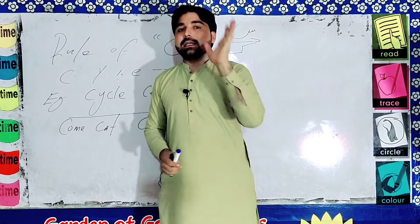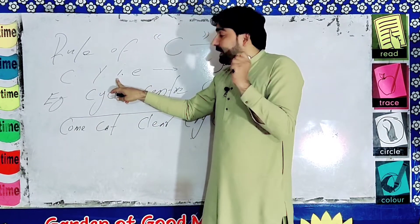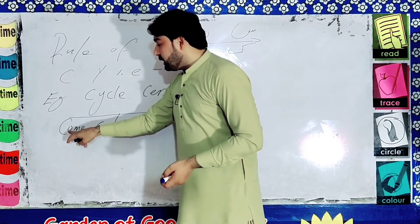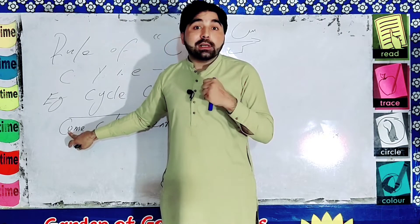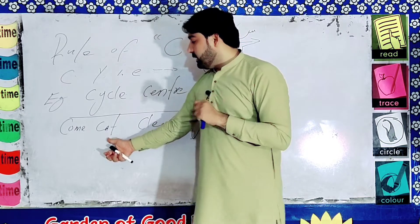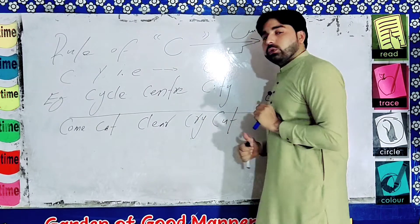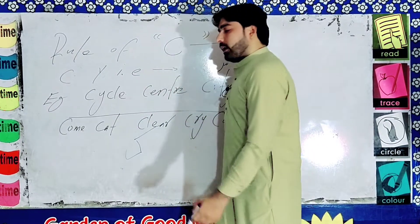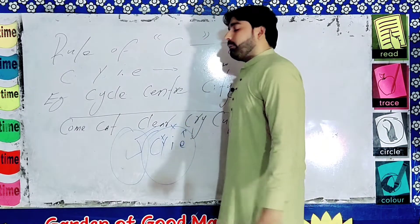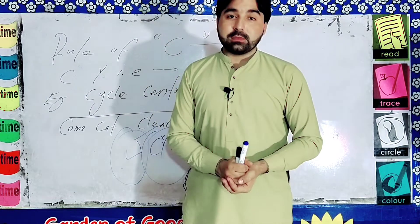یہ rule C کا S sound تھا۔ اب ہم K sound پر آتے ہیں — very simple case۔ اگر C کے بعد نہ Y ہو، نہ I ہو، نہ E ہو، تو ہم ہمیشہ وہاں پر C کو K پڑھیں گے۔ جیسے 'cam' — C کے بعد A ہے، نہ Y نہ I نہ E، تو K sound۔ 'cat' — C کے بعد A ہے، K sound۔ 'cry' — C کے بعد R ہے، K sound۔ 'cut' — C کے بعد U ہے، K sound۔ کیونکہ C کے بعد نہ A نہ Y نہ I نہ E تھا۔ امید ہے کہ آپ کو یہ lecture سمجھ میں آ گیا ہوگا۔ Thanks for watching۔